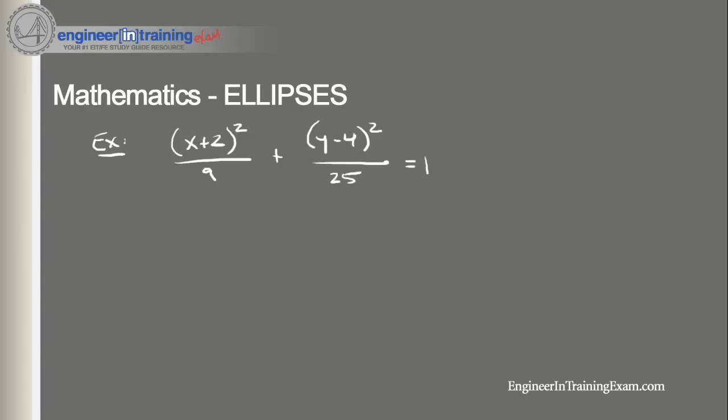We're lucky because this is in the standard form. We can easily see where h and k is, or where the center is. In this case h is going to be equal to -2 and k is going to be equal to 4. So the center of the ellipse (h,k) is located at (-2, 4).